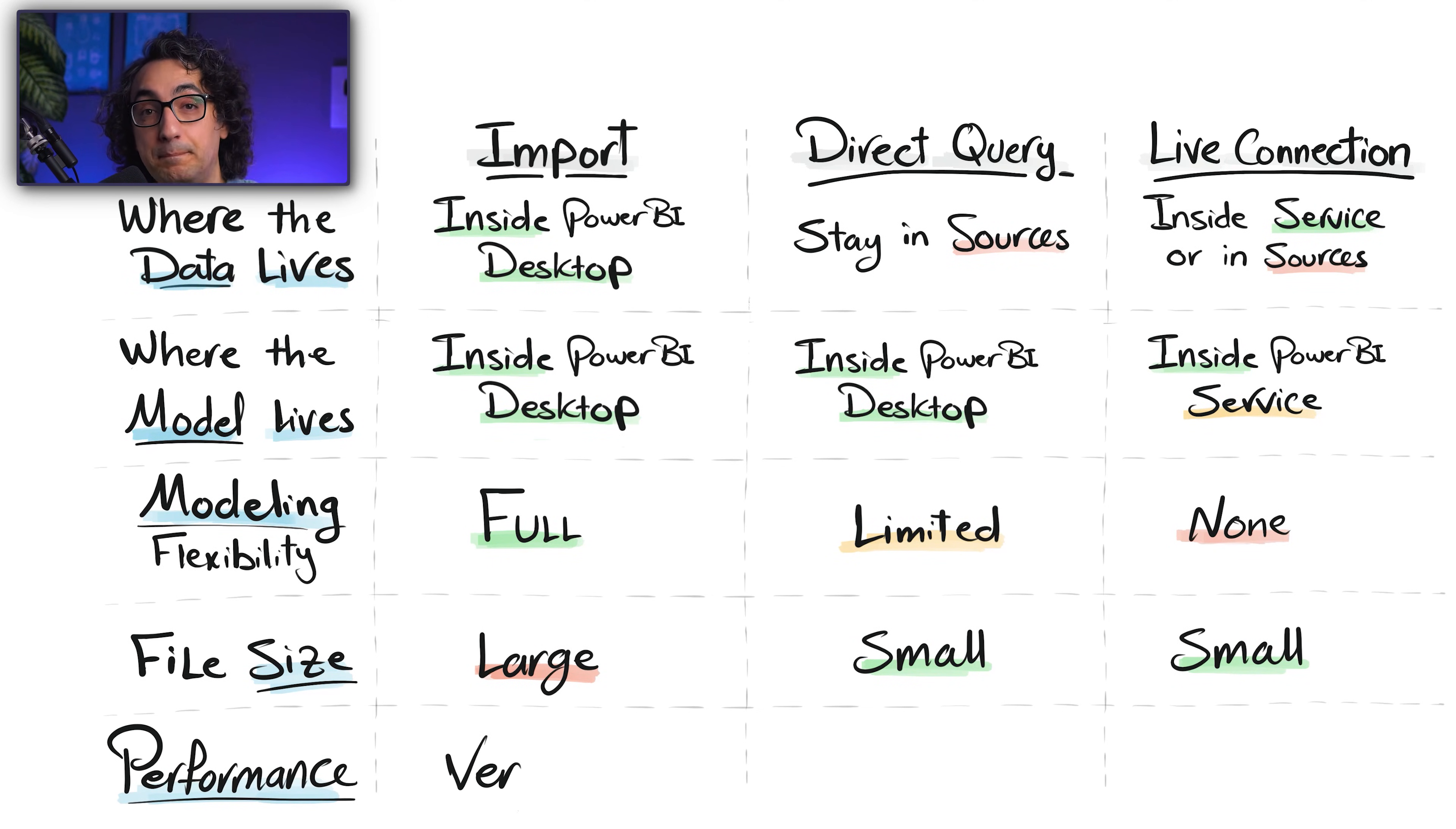With Import, you're gonna get the best performance. But with Direct Query, performance depends on external factors like networking, the source system, the database, the way the data is stored. And with Live Connection, it depends. If it's imported, then it's fast. But if it's Direct Query, then we have the same thing - it's gonna depend on the external factors.